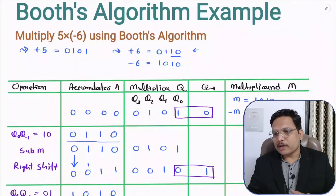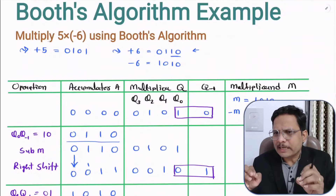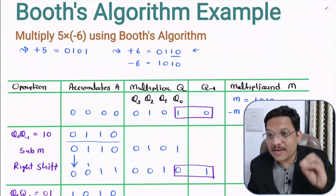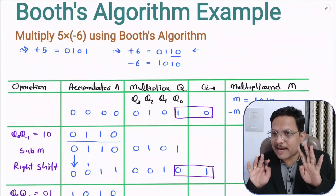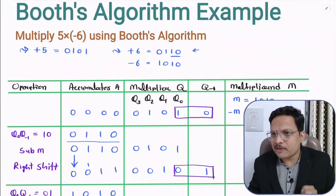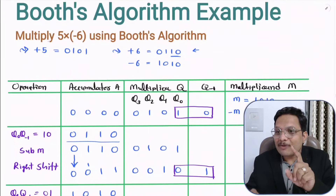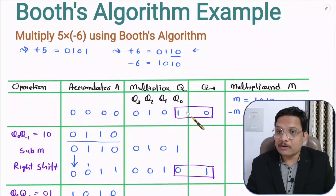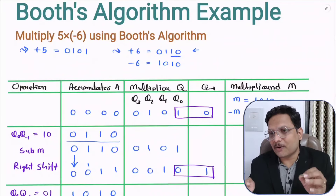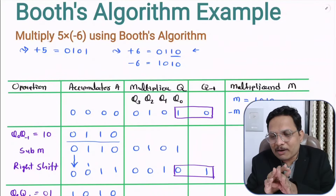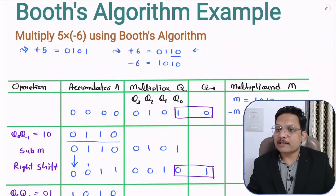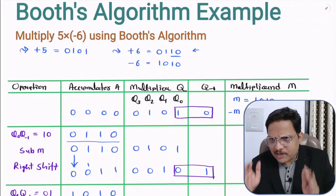So here, you just need to repeat this step — number of bits times. Here 4 bits multiplication is being performed, so 4 times you repeat. Check Q0 and Q-1: if 1, 0 subtract M; if 0, 1 add M; if 0, 0 or 1, 1 do not perform add or subtract. Right shift is a compulsory step. That is how you repeat these steps.